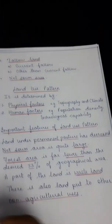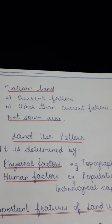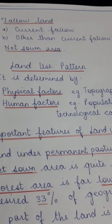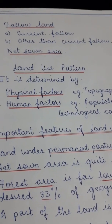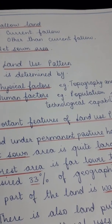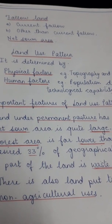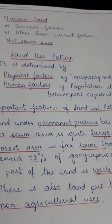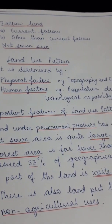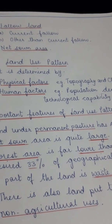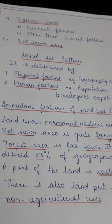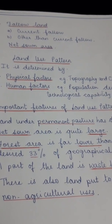Fourth is fallow land. Fallow land is land that is not cultivated for a period from one year to five years in order to let the land regain its fertility in the most natural way, without the use of chemical fertilizers. Under fallow land comes current fallow — land not under cultivation during that particular agricultural year — and other than current fallow, which is land not cultivated for a period of less than five years.